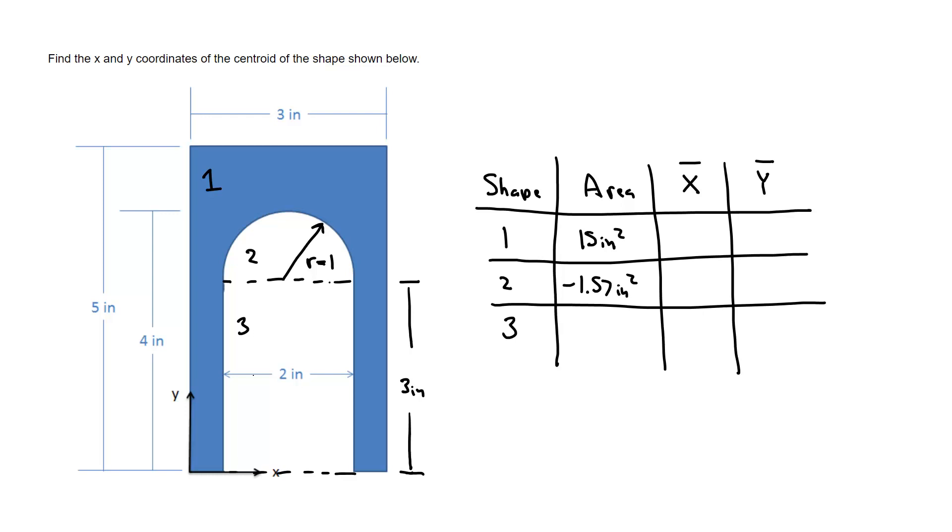And then shape 3 is a rectangle 2 inches by 3 inches. Again it's a cutout so it's going to be a negative area, negative 6 inches squared.